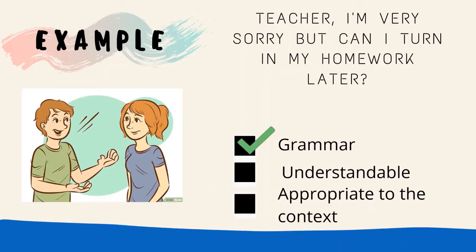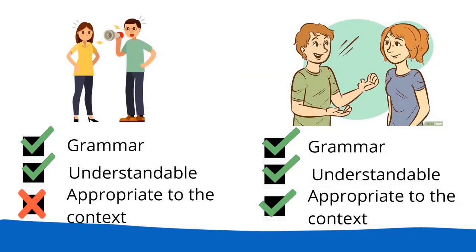The grammar was perfect. Understandable too? And was it appropriate to the context? Yes, it was. Now the student talks to the teacher in a respectful way. Both situations were covered in a grammatical way — and this is the linguistic competence. But the last one reflects the appropriate mode of use that the student gave to his teacher as an authority, and this is the communicative competence.